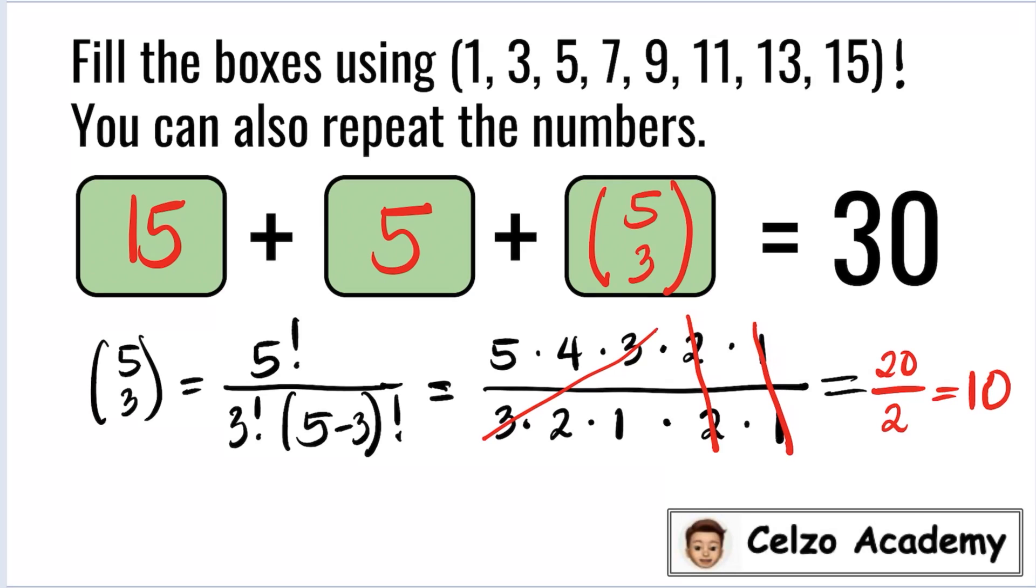So the expression 15 plus 5 plus 5 choose 3, which is 10, is equal to 30. Can you think of other solutions?